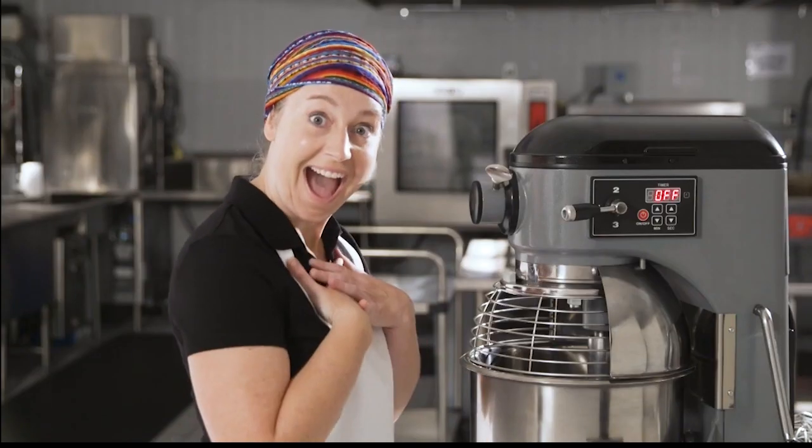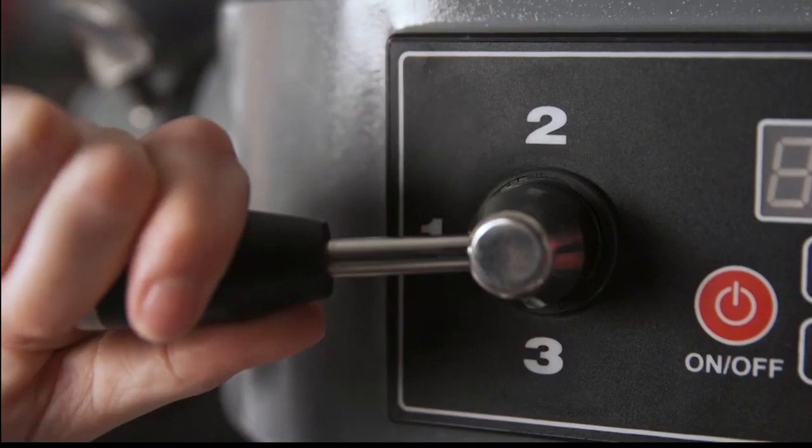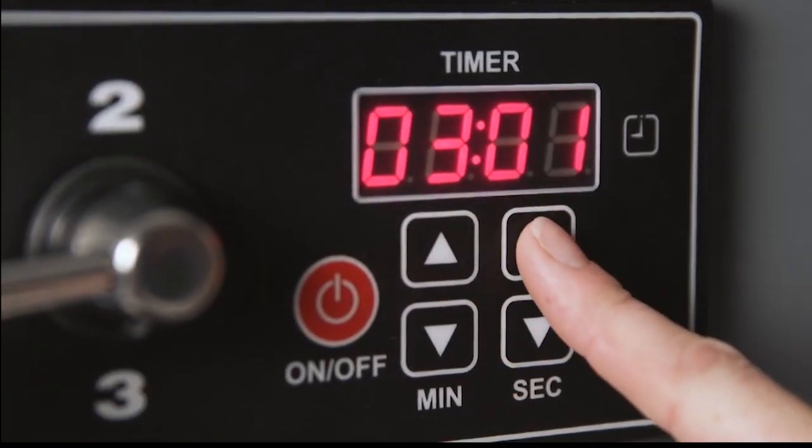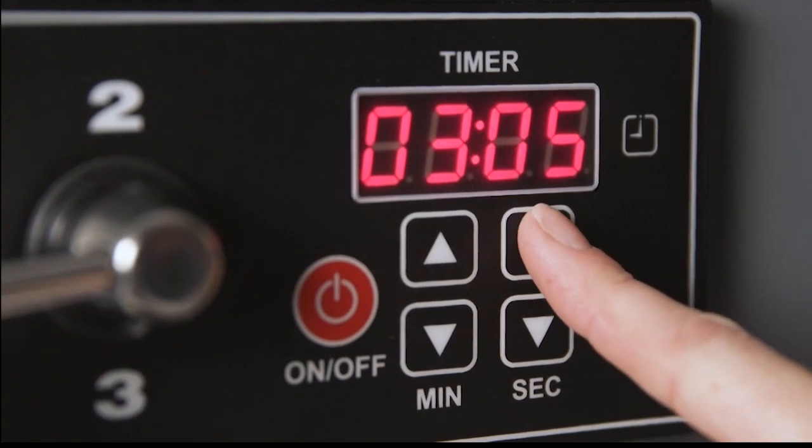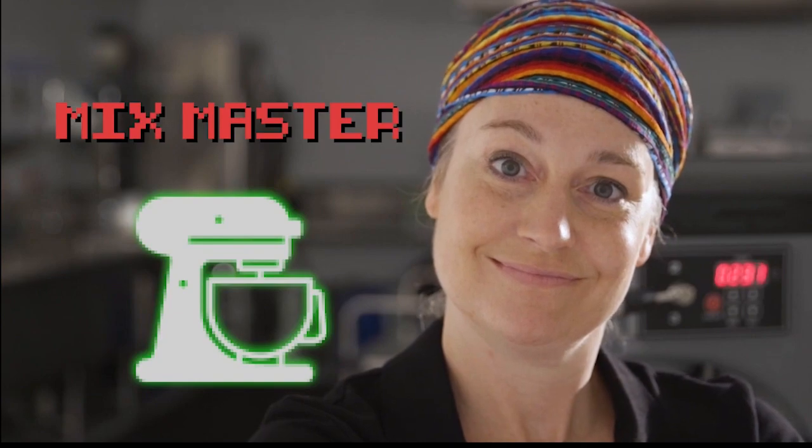And now, timed mixing. First, select your speed. Then press the minute and second buttons until the timer display reads the desired mix time. You have now mastered setting mix time. Way to go.